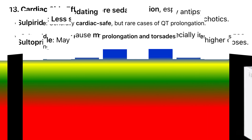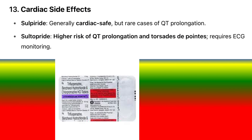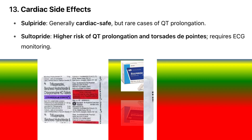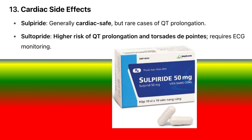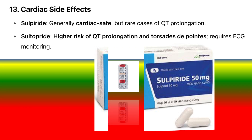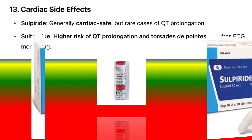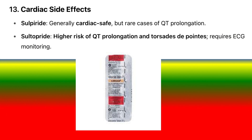13. Cardiac side effects: Sulpiride is generally cardiac safe, but rare cases of QT prolongation have been reported. Sultopride carries a higher risk of QT prolongation and torsades de pointes, and requires ECG monitoring.